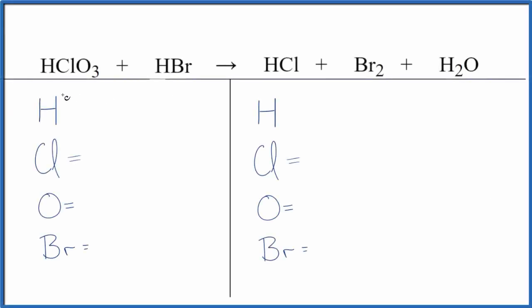Someone asked me to balance this equation here. We have HClO3 plus HBr. So let's give it a try here. We need to first count up all of the atoms here.